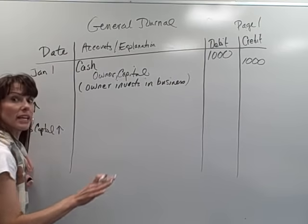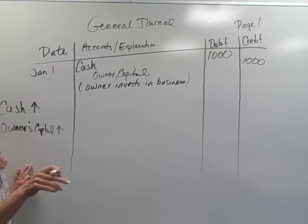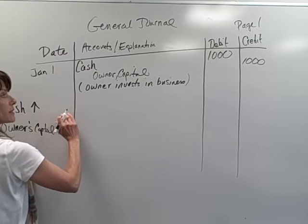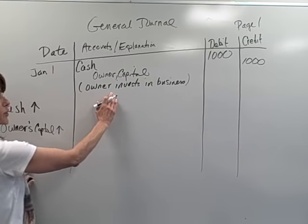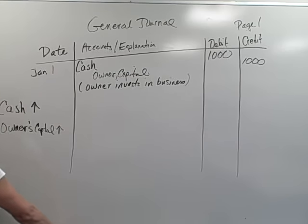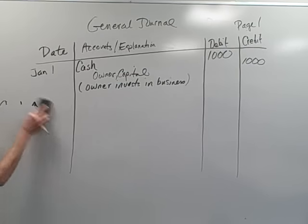Owner invests in business. Now for the explanation, you can definitely abbreviate. You always want to skip one single blank line. So you want to have a blank line before you start your next journal entry. So I'm going to erase this one. Let's do one more.